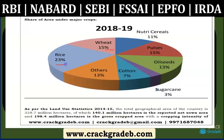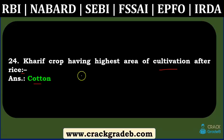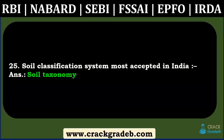Wheat is a Rabi crop, cotton is a Kharif crop, so the question was related to Kharif crops. Soil classification system most accepted in India — Soil Taxonomy. This is static content covered in the Soil chapter.